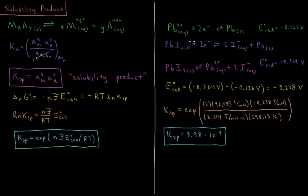So what would be an example of how we could do this in practice? So let's say we have the following setup for some electrodes here. We have lead 2 plus in aqueous solution plus 2 electrons getting reduced to solid lead. And we have, on the other side, we have lead iodide. So lead 2 iodide, with iodide minus 1 ions here.